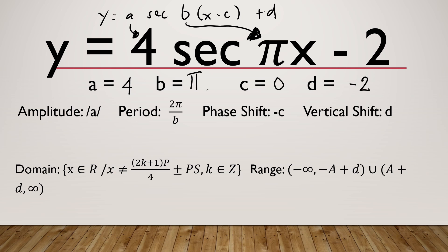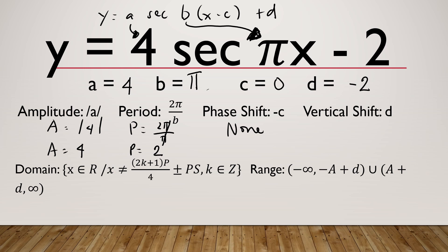After identifying the values of a, b, c, and d, we proceed with amplitude, period, phase shift, and vertical shift. For amplitude, a is the absolute value of 4, which equals 4. For period, p equals 2 pi over pi, and since 2 pi divided by pi equals 2, the period is 2. For phase shift, since c is equal to 0, phase shift is none — there is no movement of the graph right or left. For vertical shift, d is negative 2, so there will be a movement of the graph 2 units downward.